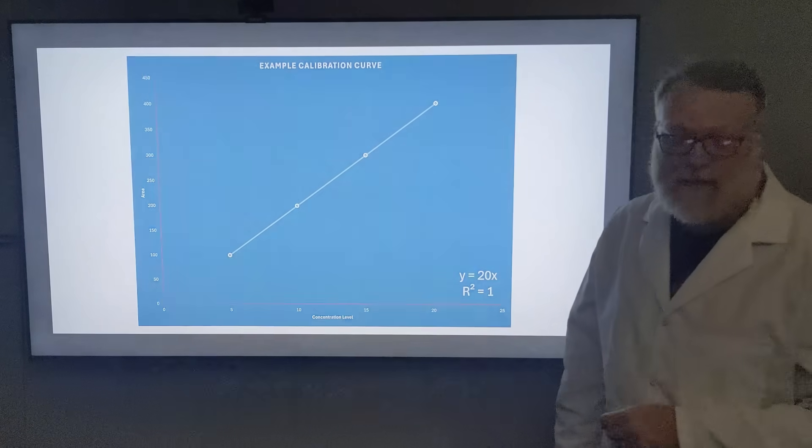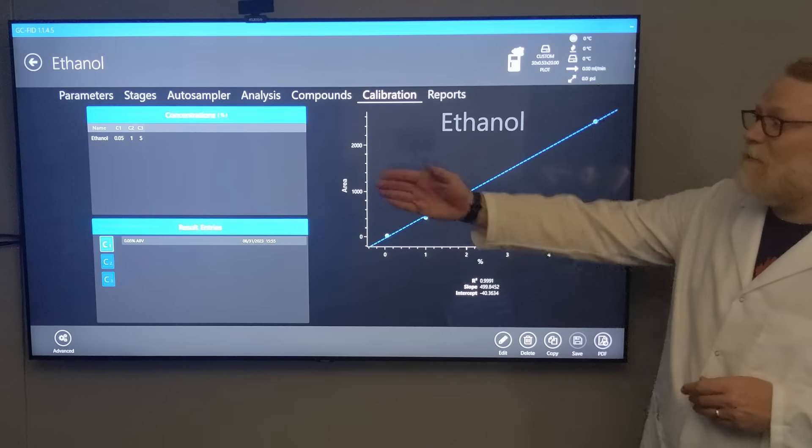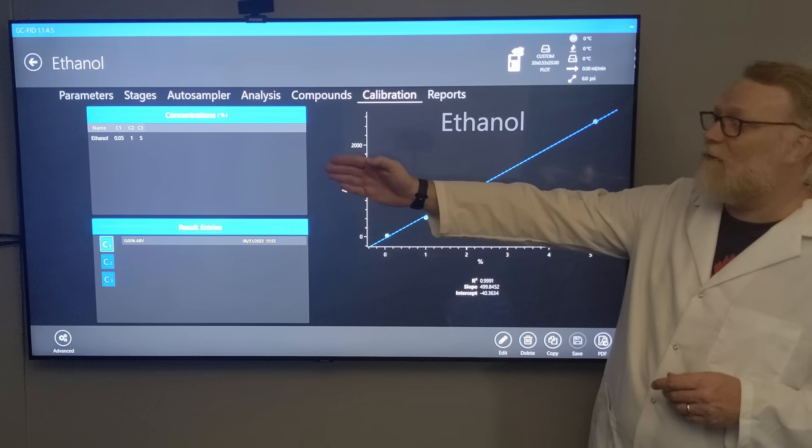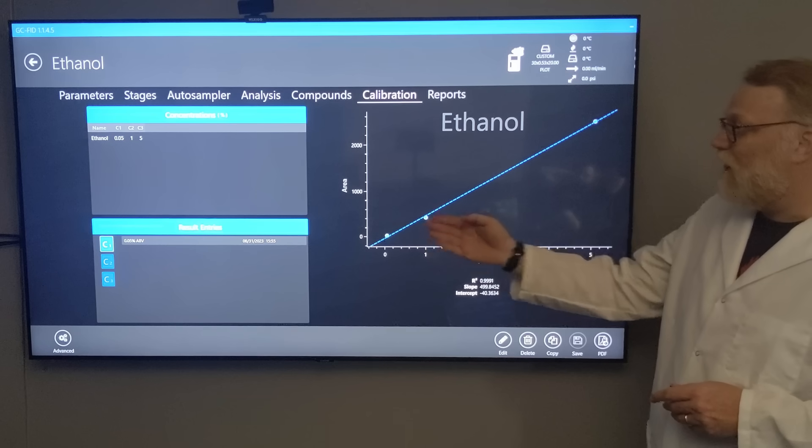Here's a real world example of ethanol. We did 0.05%, 1%, and 5% alcohol - our three points. You can see our line is best fit. It doesn't quite go through the center of each one, but that's okay, it's real world data.